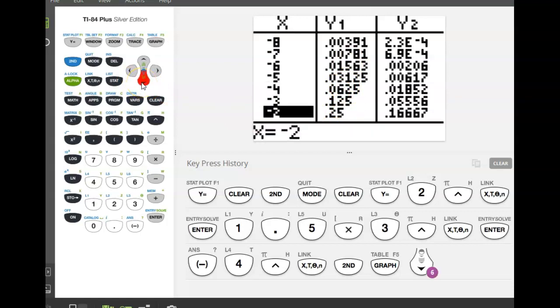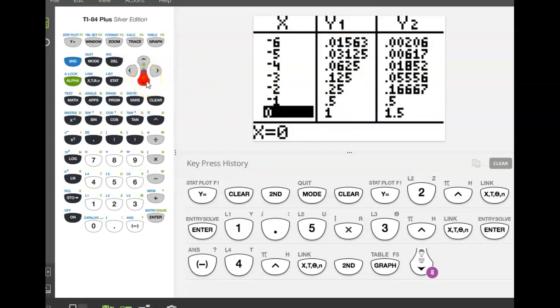And if you take a look, when we did this by hand, look at negative 2. When I plugged in negative 2 for that first function 2 to the x, I got 0.25. When I plugged in negative 1, I got 0.5. When I plugged in 0, I got 1. So that's that first function. And I can see the same values here. Here's the second function that I plugged in, 1.5 times 3.